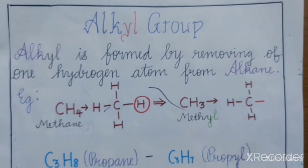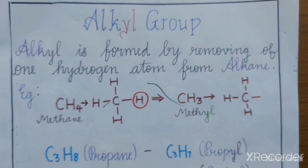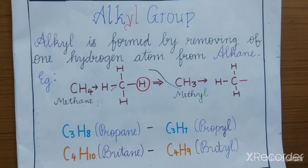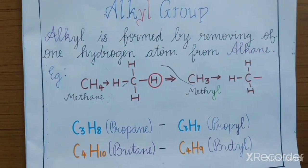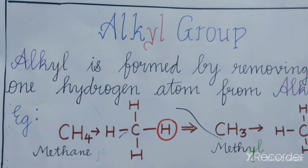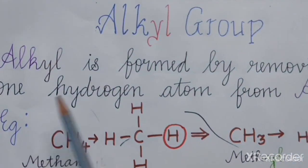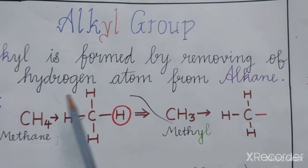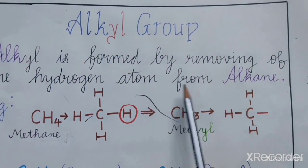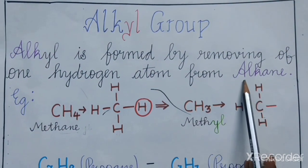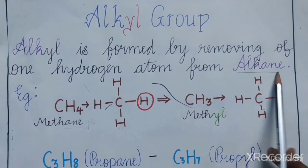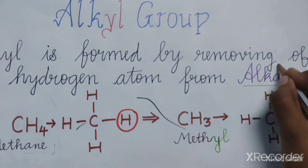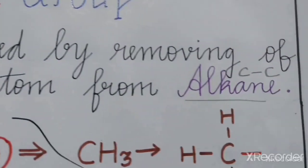I know you all must be thinking about what is an alkyl. So let's understand: alkyl is formed by removing one hydrogen atom from alkane. Alkane is nothing but a carbon-carbon single bond.